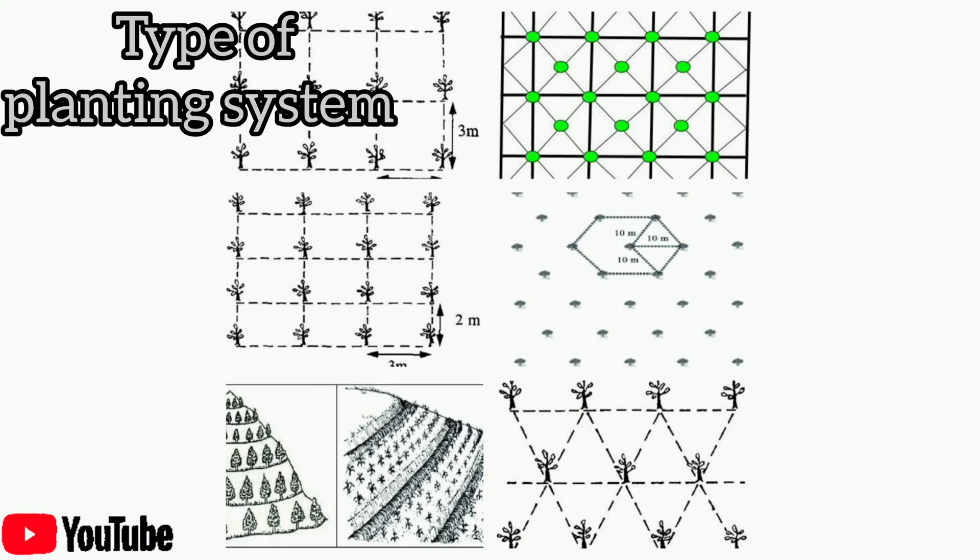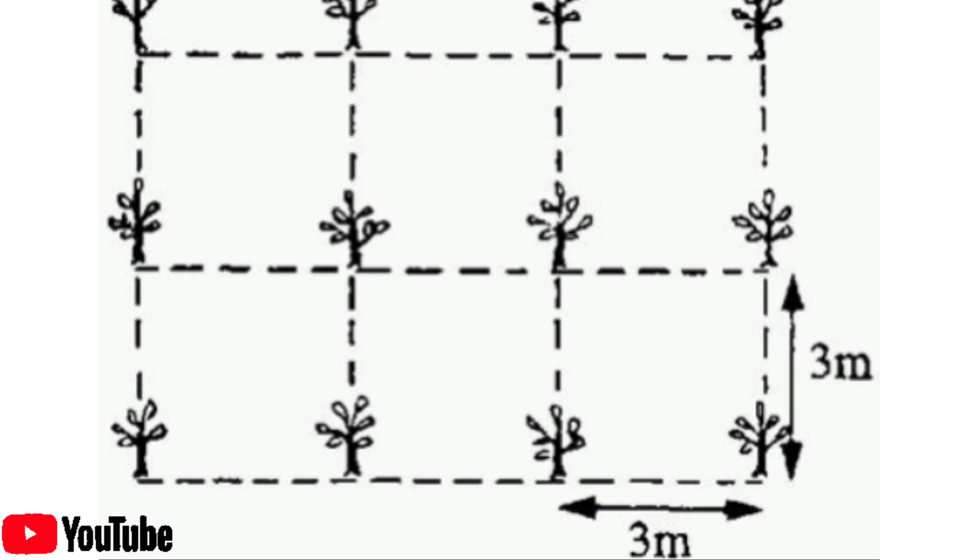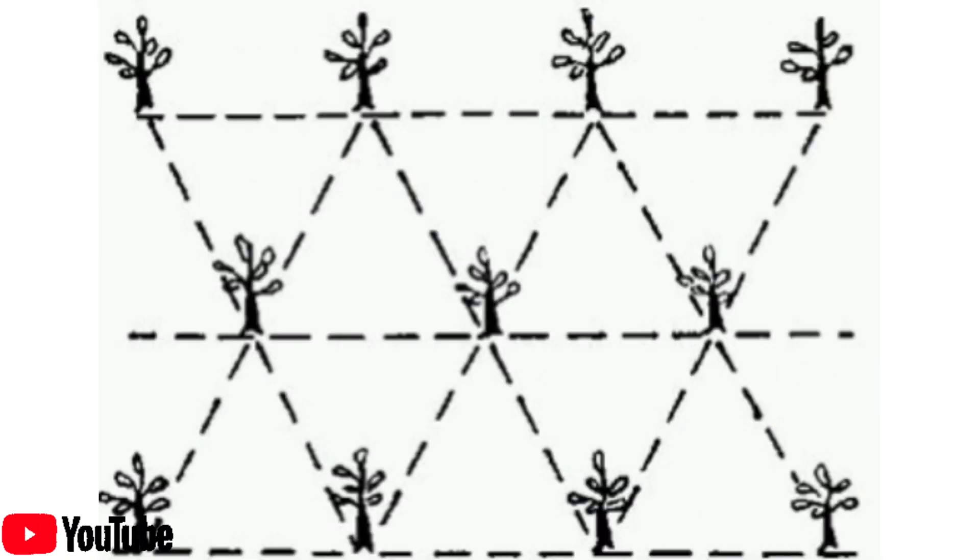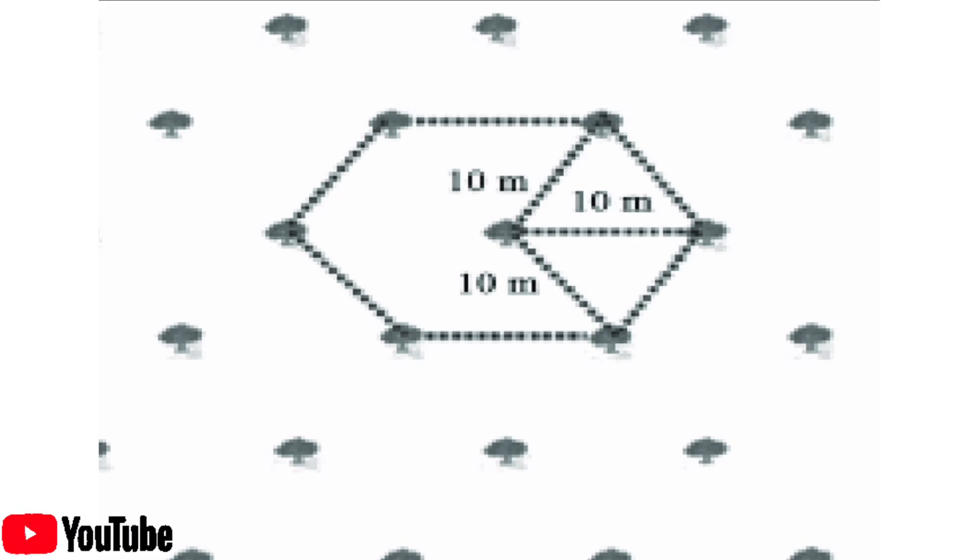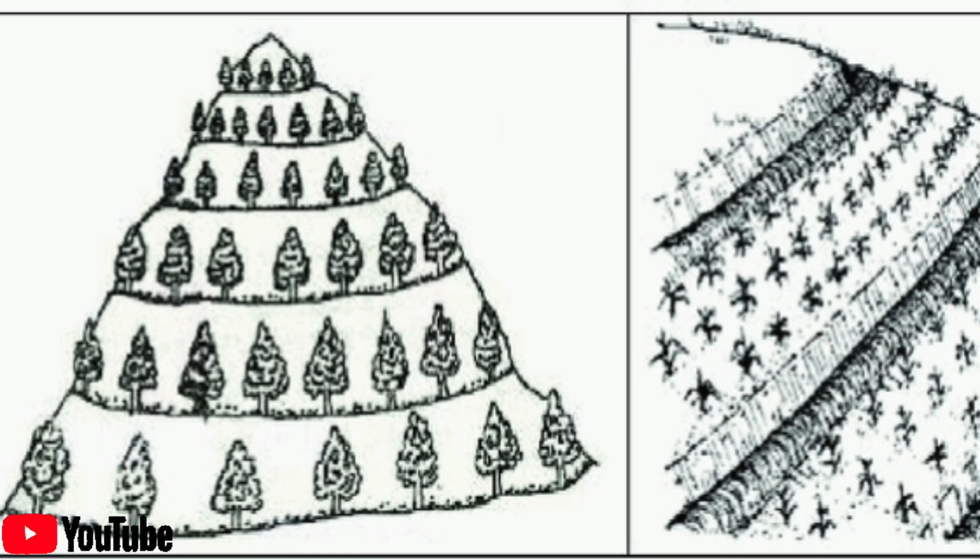Type of planting system. There are several types of planting systems: 1. Square system, 2. Rectangular system, 3. Triangular system, 4. Quincunx system, 5. Hexagonal system, and 6. Contour system.